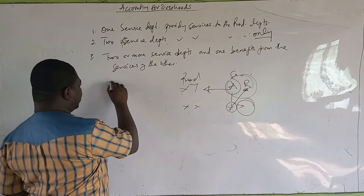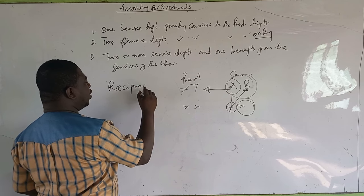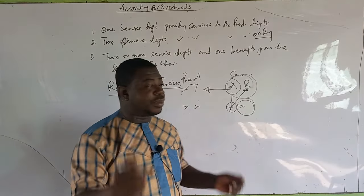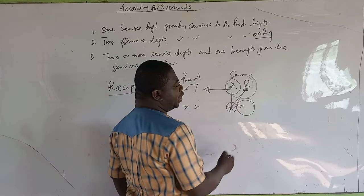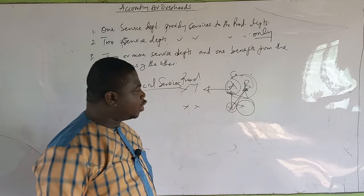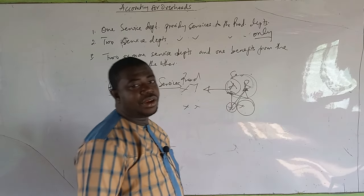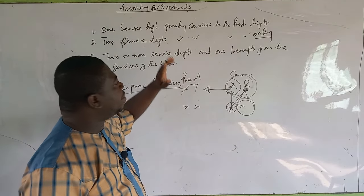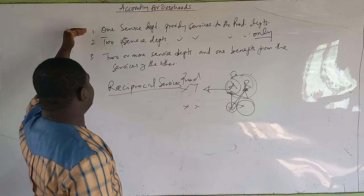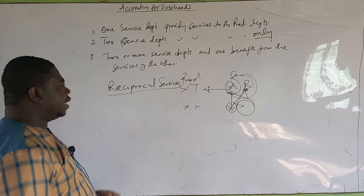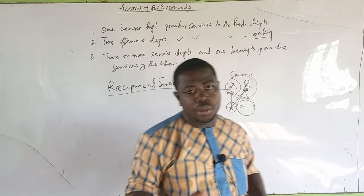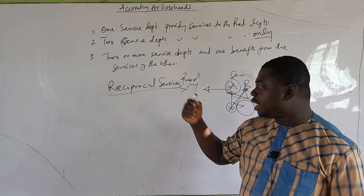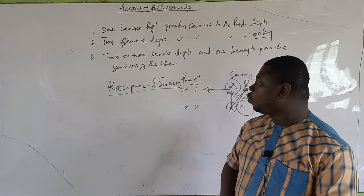After we are done with these three scenarios, we will look at reciprocal services. Reciprocal services is where the two service departments benefit from each other — whilst A is benefiting from B, B is also benefiting from A. So we are going to do reapportionment until their balances run down to zero. That is quite technical and complex. I'm going to talk about the repeated distribution method, the elimination method, and even the budget break method, so I want you to follow as I take you through.